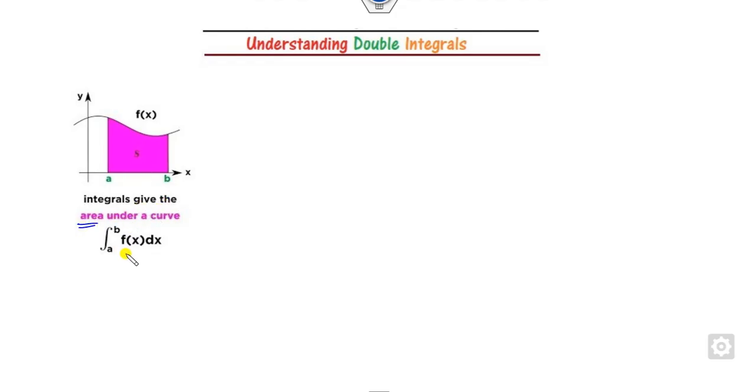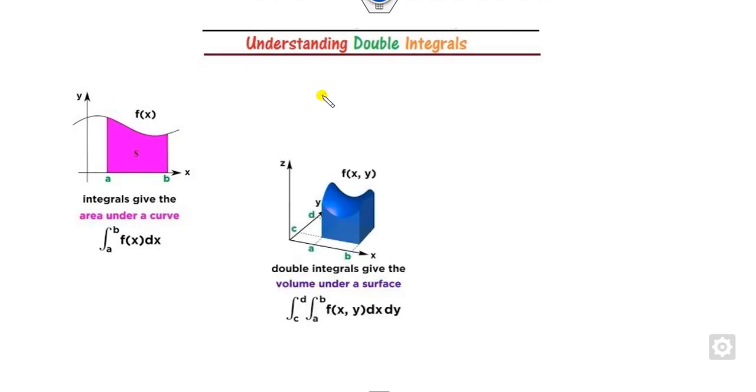We all know that by using the single integral you can find the area under the curve — the integration from a to b over the function f(x) gives you the area under the curve. This is only for a 2D picture. But in the 3D case, once you integrate a function f(x, y) over x and y, you will get the volume under the surface.